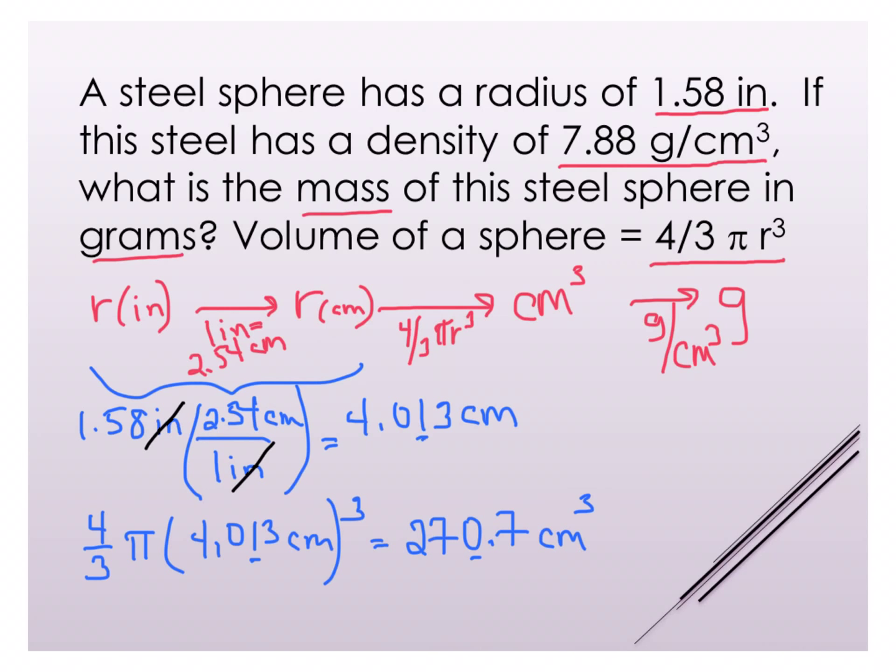Now what I need to do is actually take this volume in centimeters cubed, so I've got 270.7 centimeters cubed. Now I'm going to use my density because remember I'm trying to get to grams.